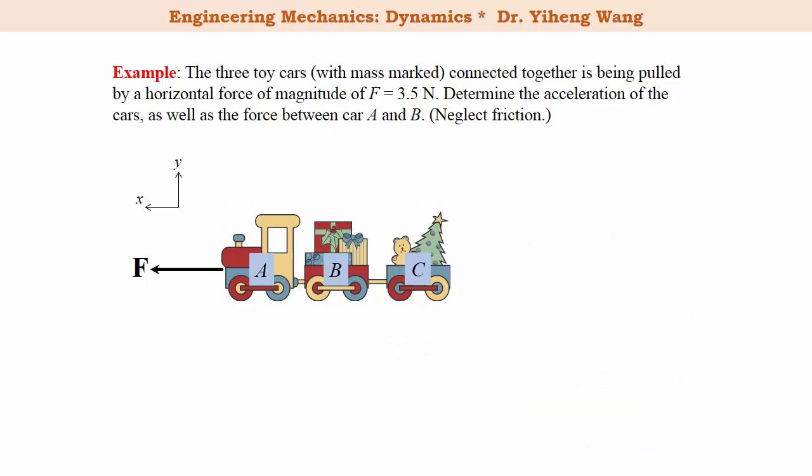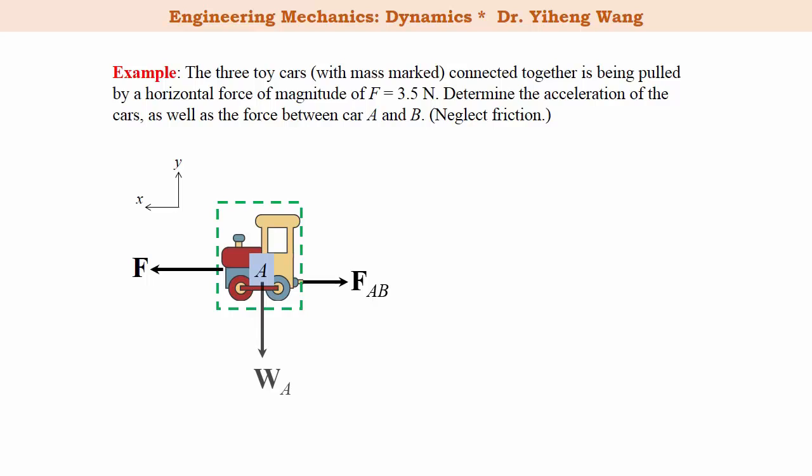For the second part of this problem, to solve for the force between car A and car B, we can no longer treat the entire toy car set as one system, because if that's the case, then the force between car A and car B is internal and cannot be solved. Therefore we need to draw the free body diagram of car A only. This way, the force between car A and B is now exposed to be an external force. We also need to include the weight force and support force, and this completes the free body diagram.